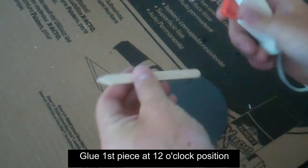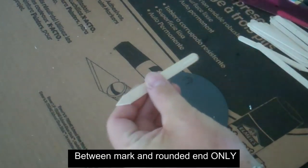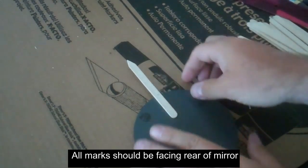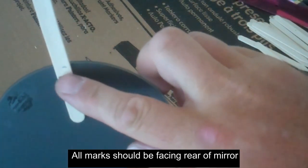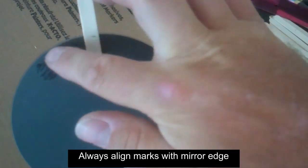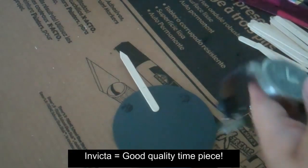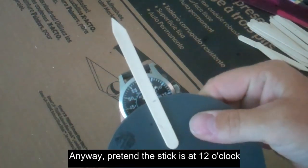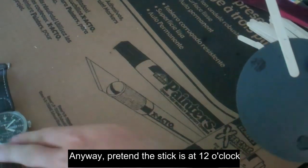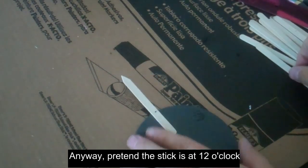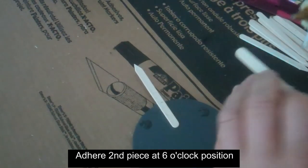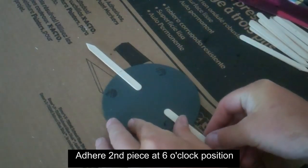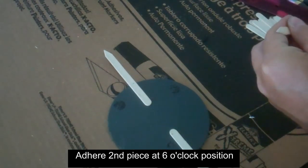Now take the first stick and glue it to the back of the mirror. Line up the mark to the edge of the mirror. This first stick will represent 12 o'clock's position just like the time on a watch. Now take the second stick and glue it to what would be 6 o'clock's position on the back of the mirror.